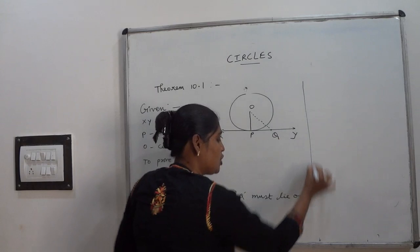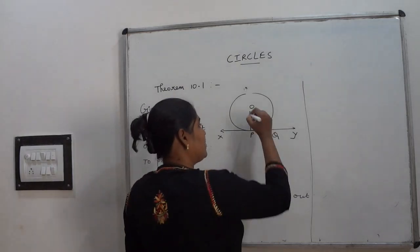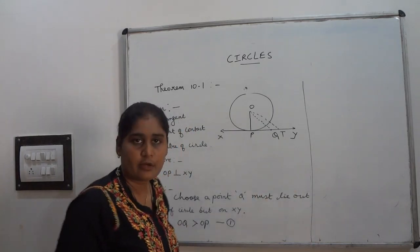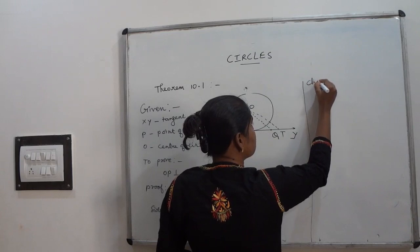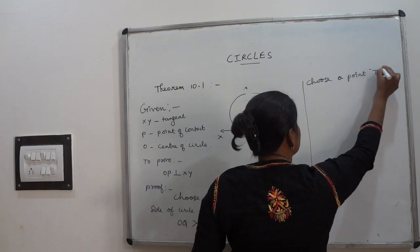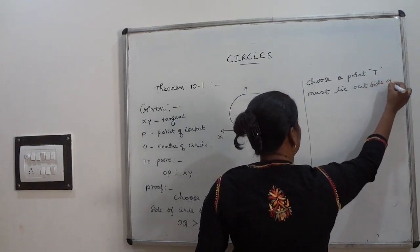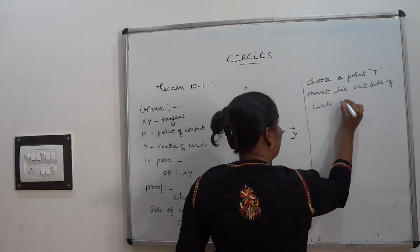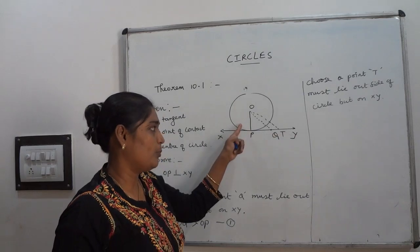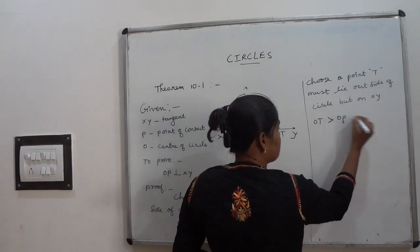Like that, choose one more point on XY and show that distance is also greater than OP. I am choosing one more point, suppose T, marked on XY. Choose point T on XY that must also lie outside of the circle. Now compare OT and OP: OT is greater than OP. Write this as the second equation: OT > OP.